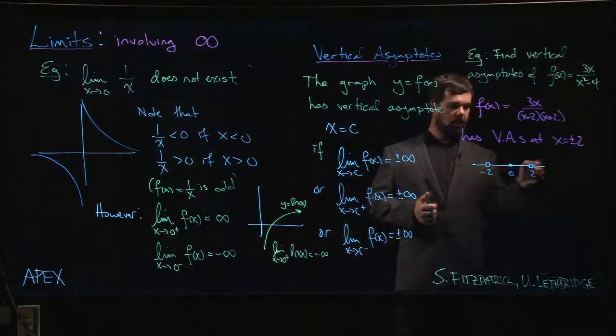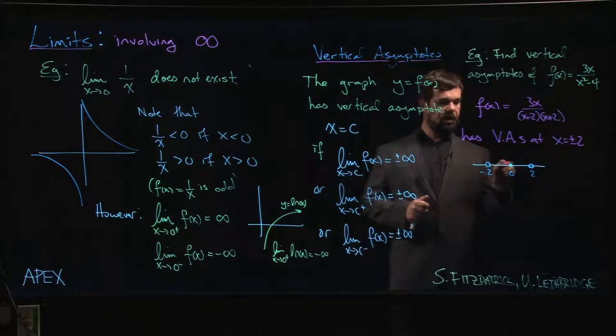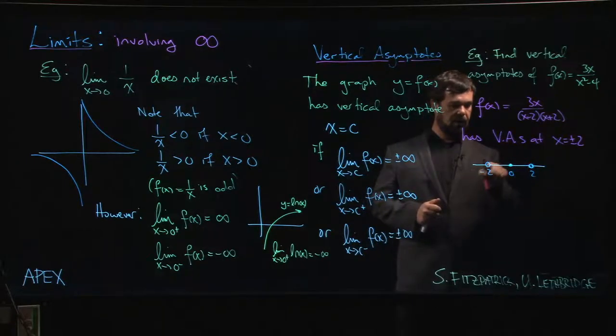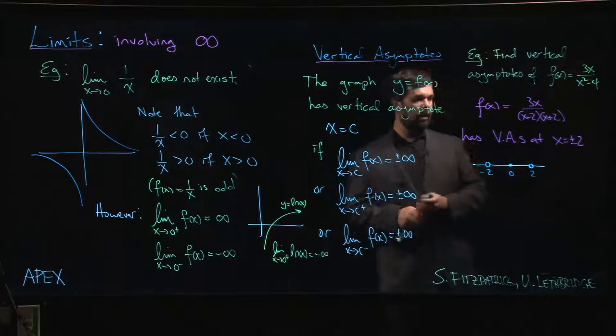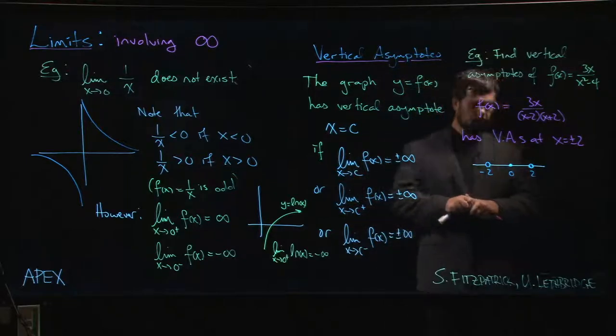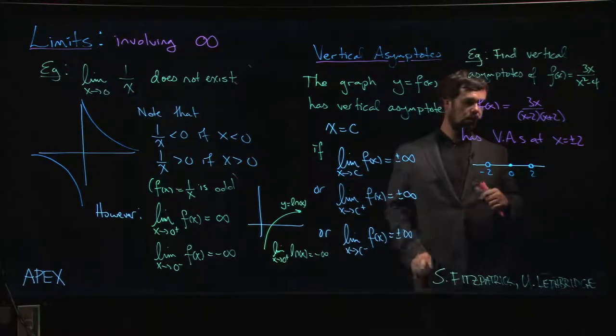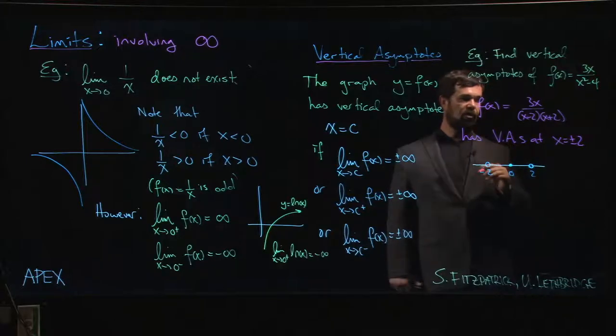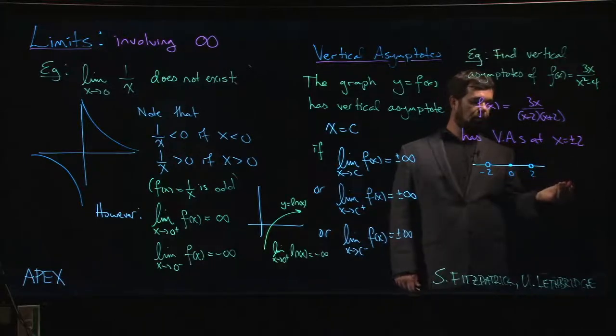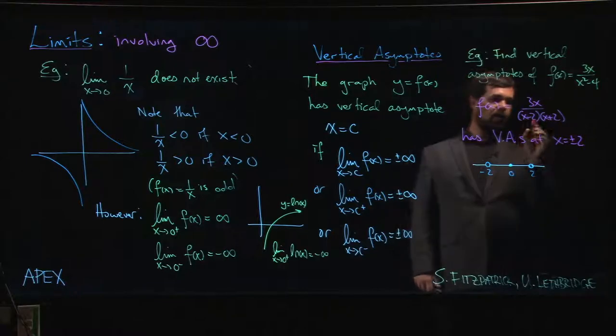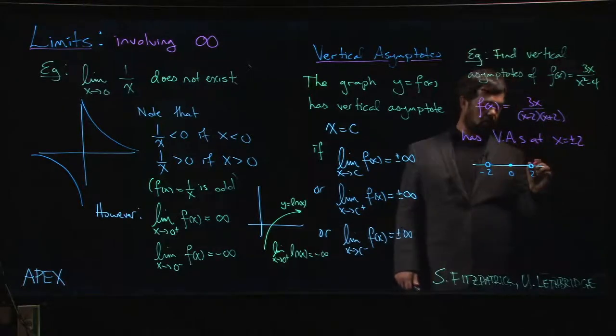Now, what we can do here is you'll see that these three points of interest, they divide the number line into four intervals. In each of those intervals, you can choose a test value, and you can figure out whether the function is positive or negative. So if I choose, say, x bigger than 3, I can see that all three of these factors are going to be positive. So the function overall is positive.